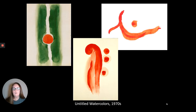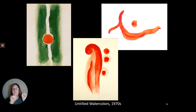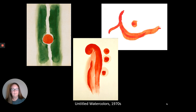Georgia O'Keeffe continued to create artwork throughout her entire life. Eventually she did lose her eyesight — she had macular degeneration, which means she had no central vision and could only see peripherally, only out to the right and left. But it didn't stop her from creating art; she had a drive to continue. These are watercolors she created late in her life.